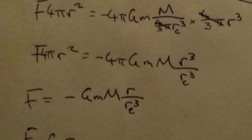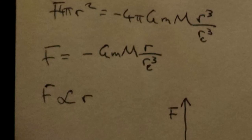Now I'll divide through by 4 pi r squared and we're left with F equals minus GMm r over r_e cubed, right? If you can see there, you'll see that the force is proportional to the radius inside the object.